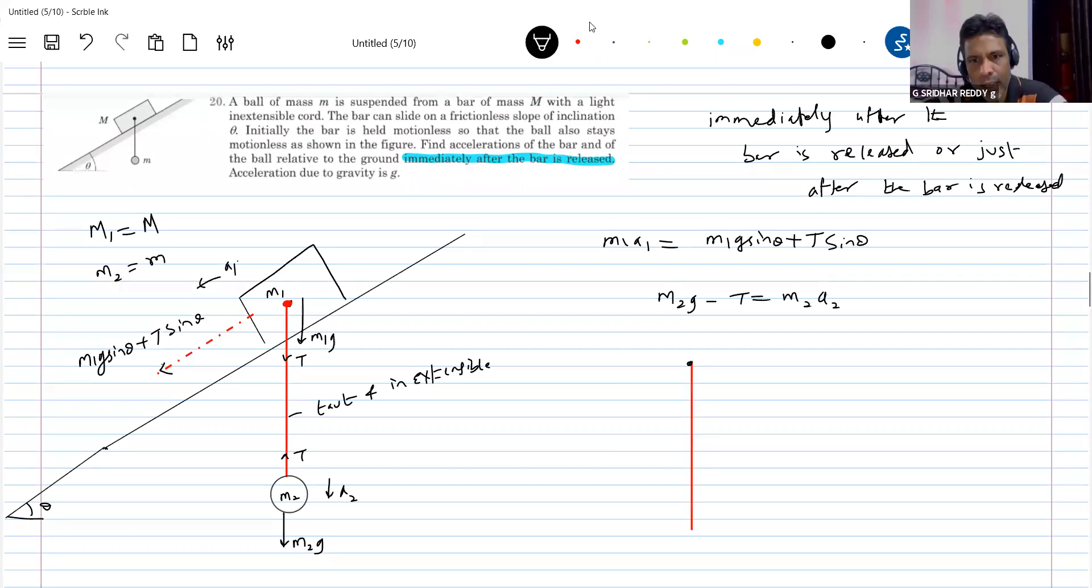This is the acceleration of this end of the string, and this end of the string has acceleration like this. Then what can be this angle? This should be theta.